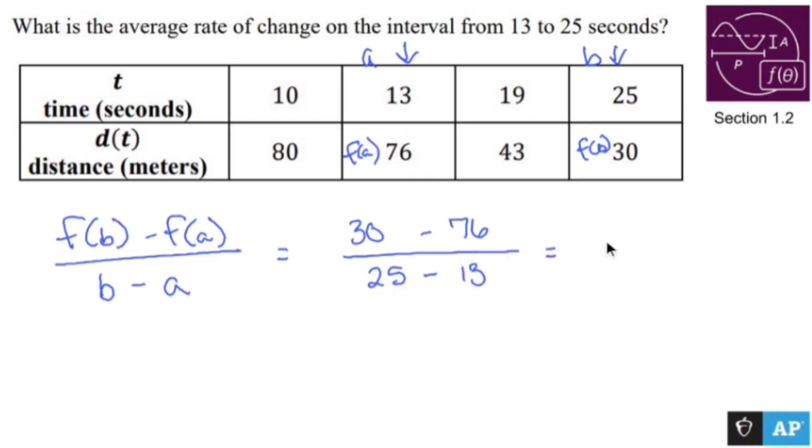What's that? Negative 46 over 12. Let's see, you can divide the top and the bottom by two.